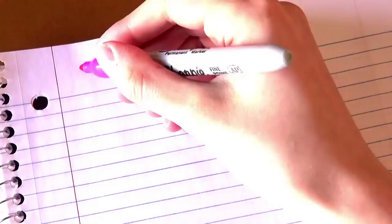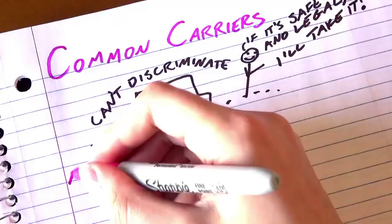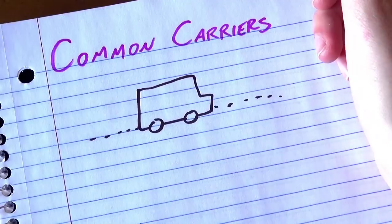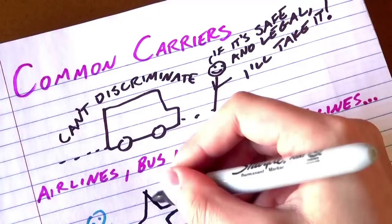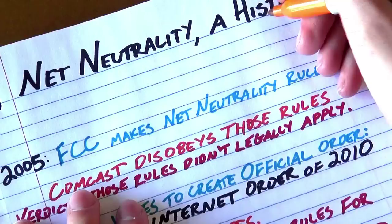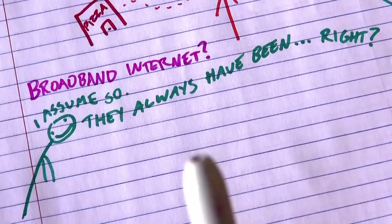Basically, a common carrier can't discriminate among the things they carry. Airlines and telephone companies are common carriers. So Apple can't pay Virgin America to not let any Microsoft employees on their flights. T-Mobile can't purposely drop your call when you're trying to order a pizza if Domino's won't pay them a cut of the order. Up till recently, ISPs have been acting like common carriers.